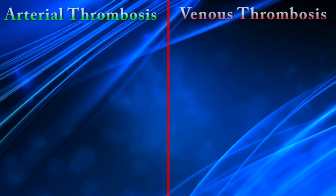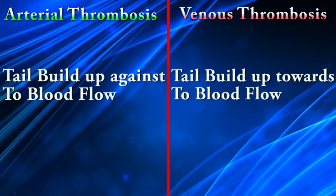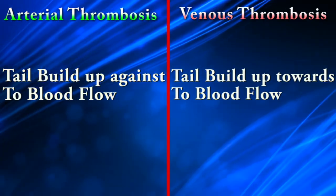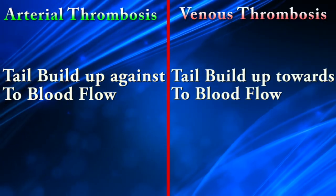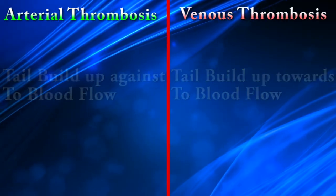In arterial thrombosis, the tail builds up against the direction of blood flow, but in venous thrombosis the tail builds up in the direction of blood flow.